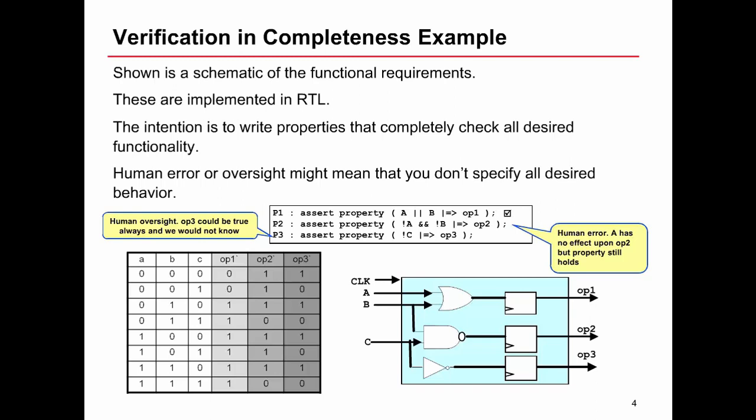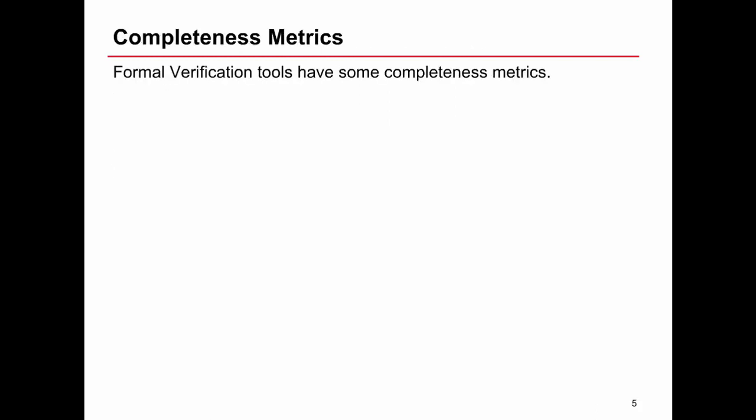Clearly this is not good news because we'd never know we've made a mistake. Another kind of problem is we've got this assertion P3, and what it says is if not C is true, then OP1 will be true the next cycle, but OP3 could be tied up to the power rail and we'd never know. So we have to ask ourselves, did we specify all the properties we wanted to check that we had exactly that circuit shown? Simulators do not have any capability to tell us what we wish to know, which is did we write enough properties for our design.